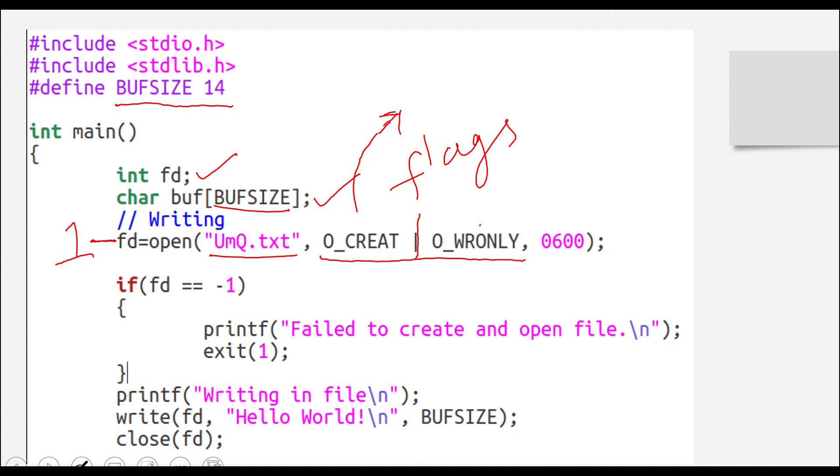Let's see this flag. What is this flag? It's O underscore wronly, W R O N L Y. W R only is for write only. So this flag is for write only.